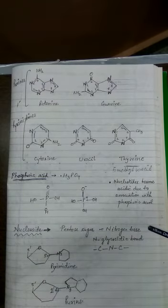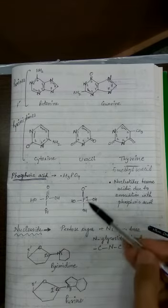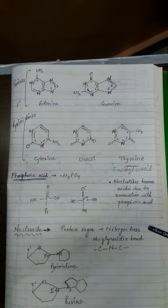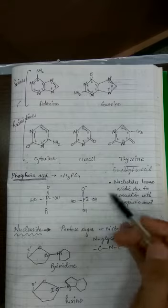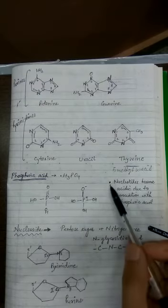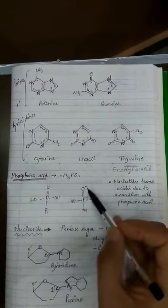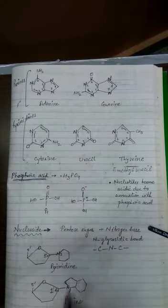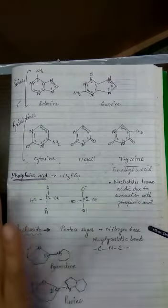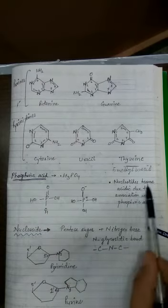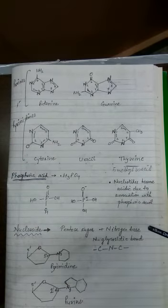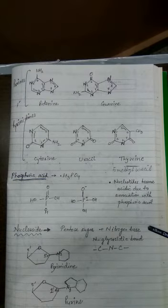The establishment of this link causes loss of water. Nucleotides become acidic due to the presence of phosphoric acid. We will continue drawing diagrams on the next page. So today you have learned three points: first, nucleotides are the basic building block or functional unit of nucleic acids.